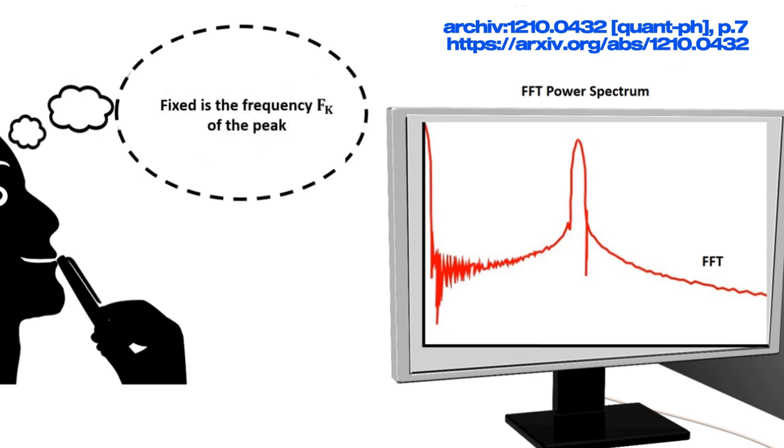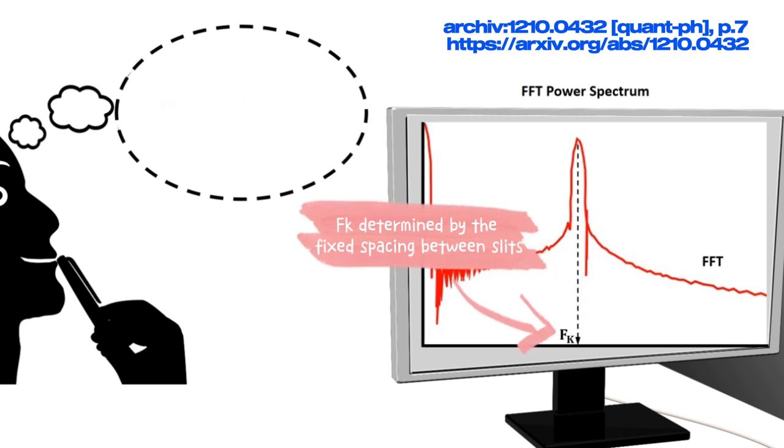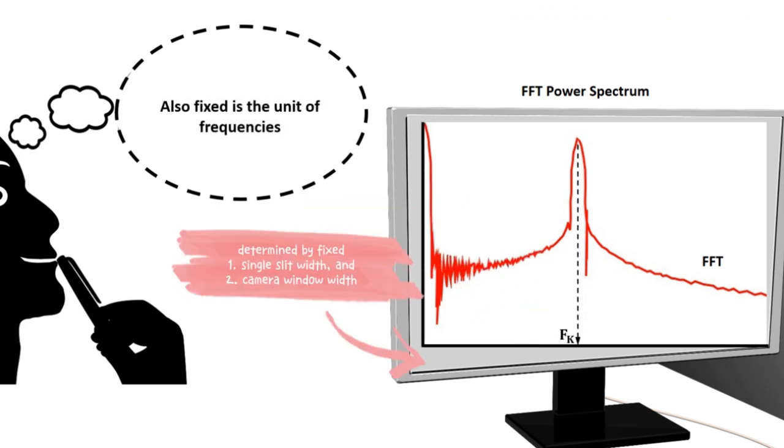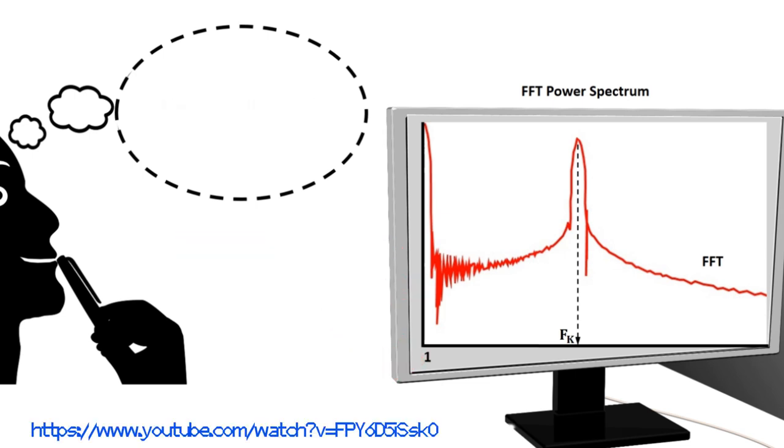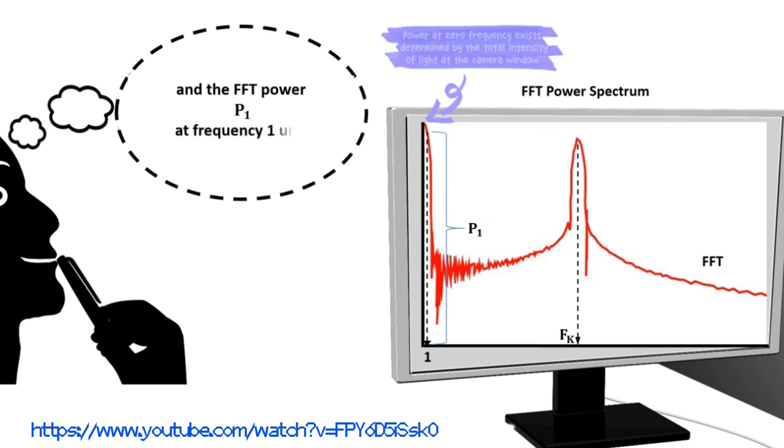Fixed is the frequency fk of the peak. Also, fixed is the unit of frequencies and the power P1 at frequency 1 unit.